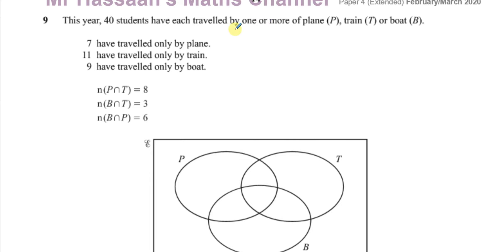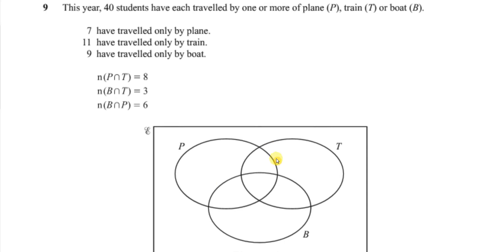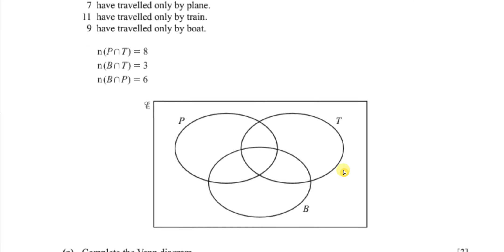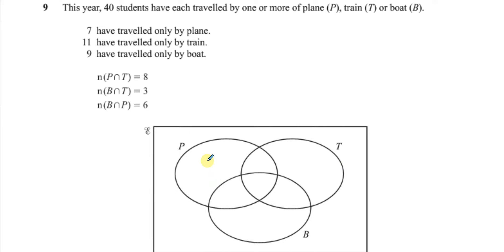7 have travelled only by plane, 11 have travelled only by train, and 9 have travelled only by boat. Since we need to complete the Venn diagram, we can place these right away. 7 people travelled by plane only, 11 by train only, and 9 by boat only. I've placed these in the correct areas.